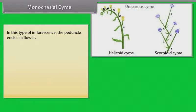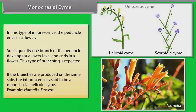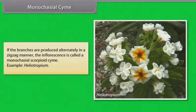In monocasial cyme, the peduncle ends in a flower. Subsequently, one branch of the peduncle develops at a lower level and ends in a flower; this type of branching is repeated. If the branches are produced on the same side, the inflorescence is a monocasial helicoid cyme. Example: Hamelia, Drosera. If the branches are produced alternately in a zig-zag manner, the inflorescence is called a monocasial scorpioid cyme. Example: Heliotropium.